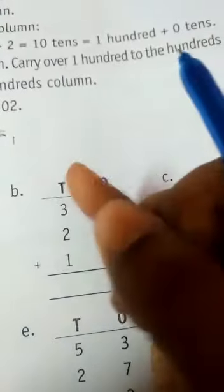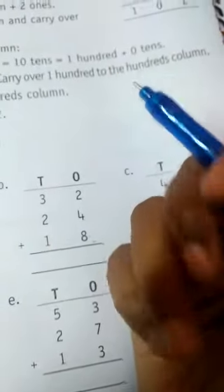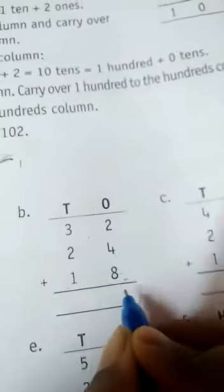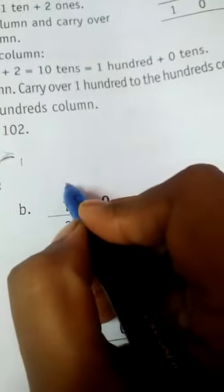6 plus 8 is equal to 6 plus 8. 6 in mind. Then 7, 8, 9, 10, 11, 12, 13 and 14. So here 14, write 4 in the ones place. Then balance 1 is here.